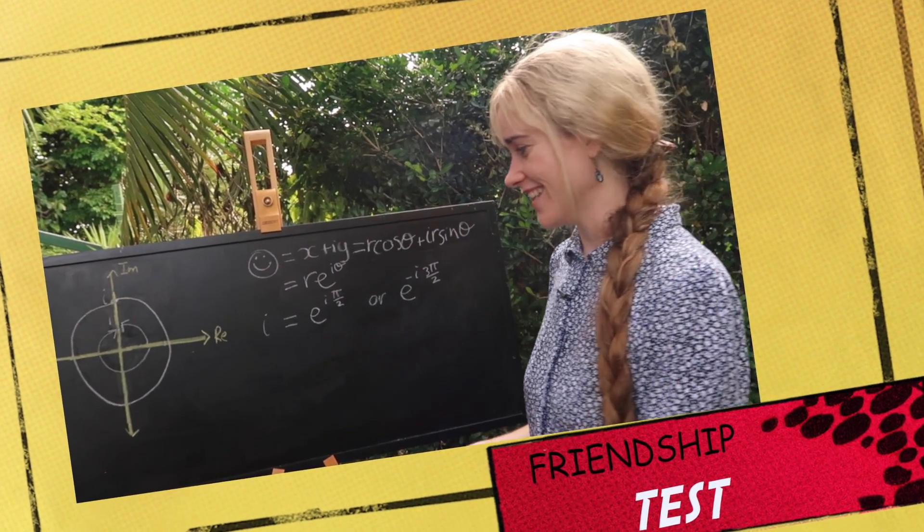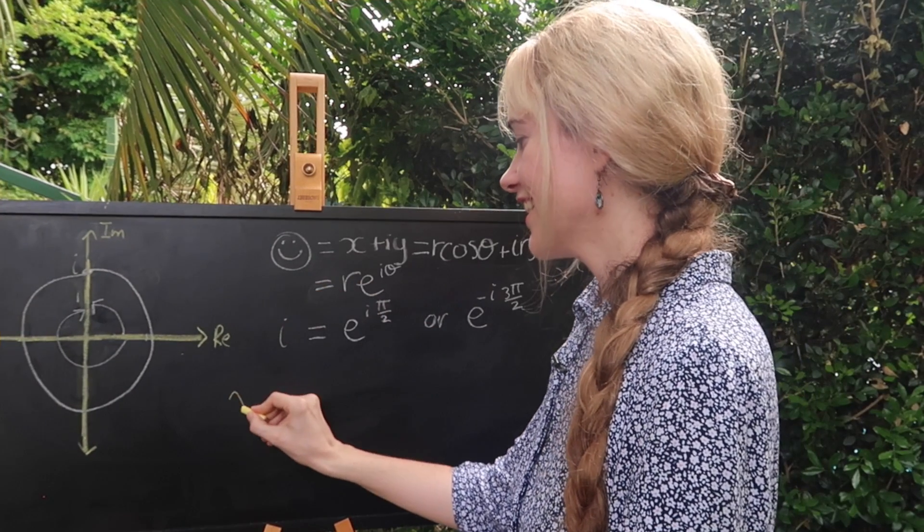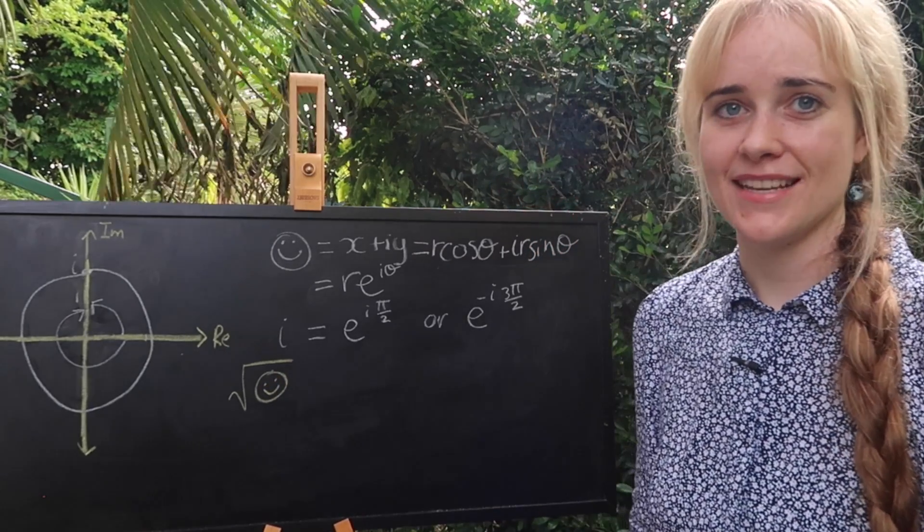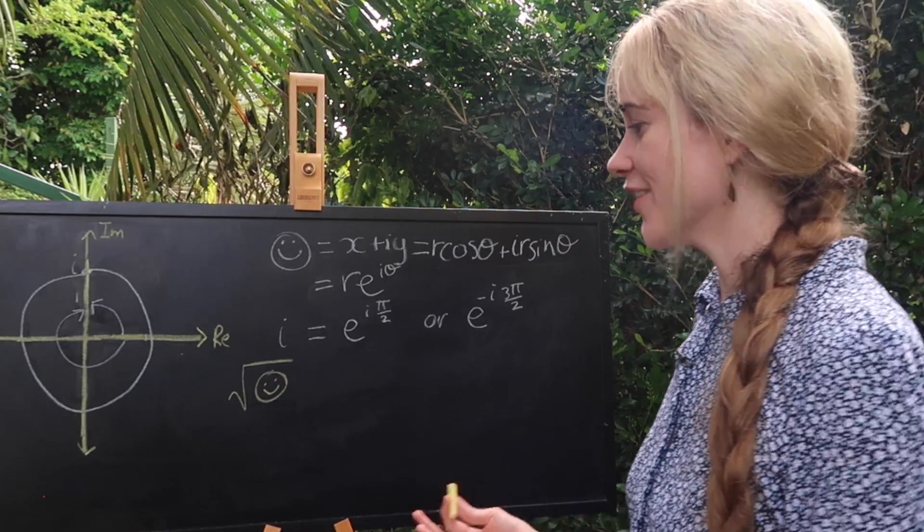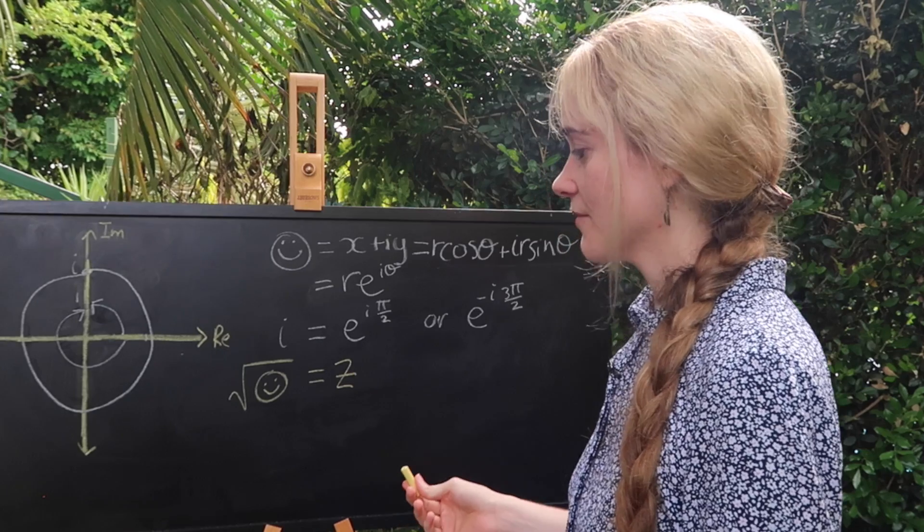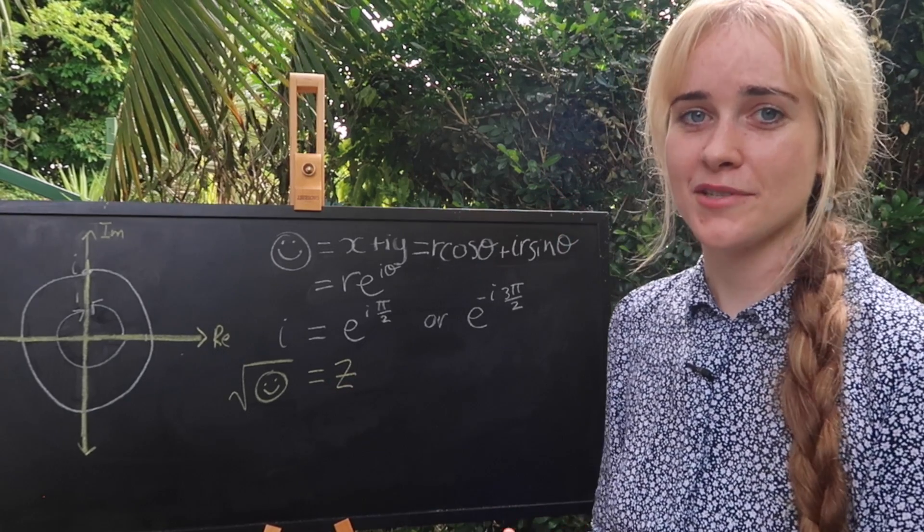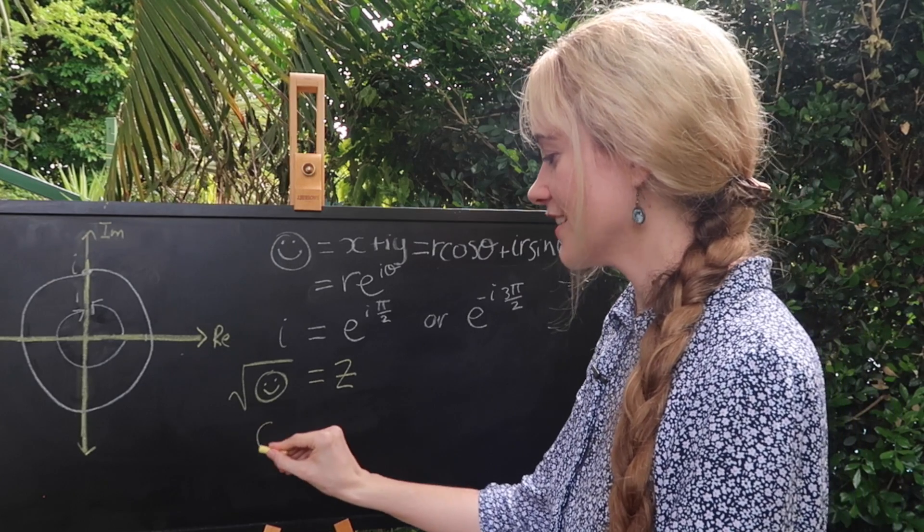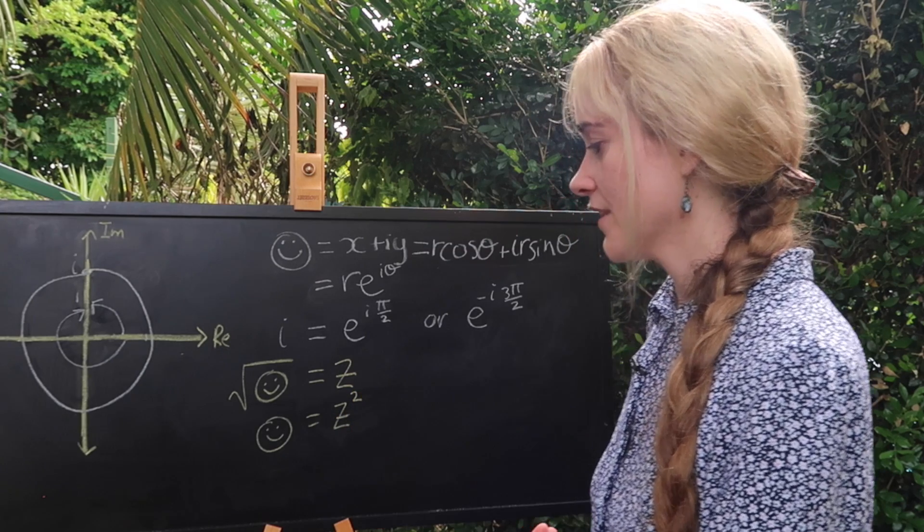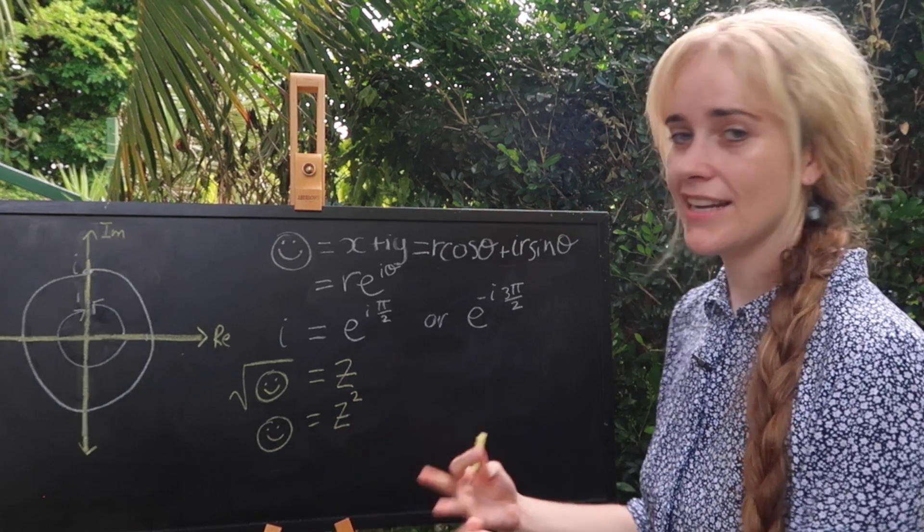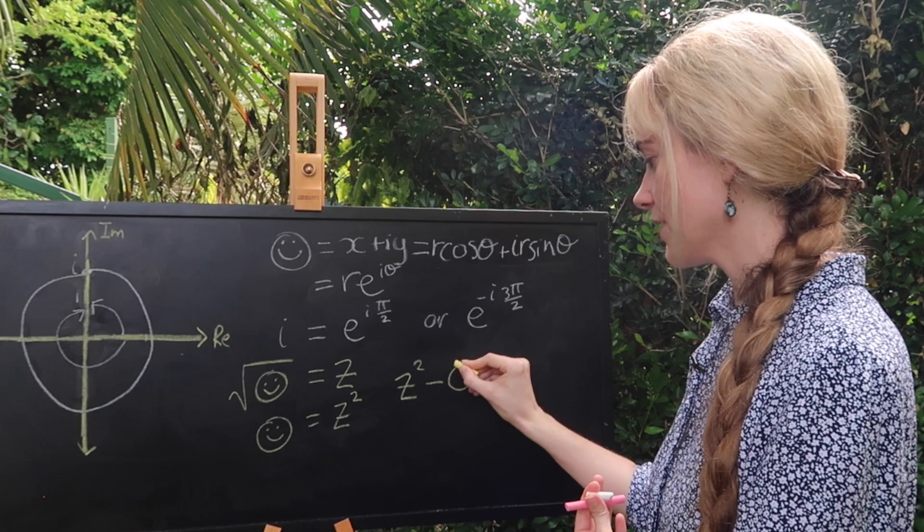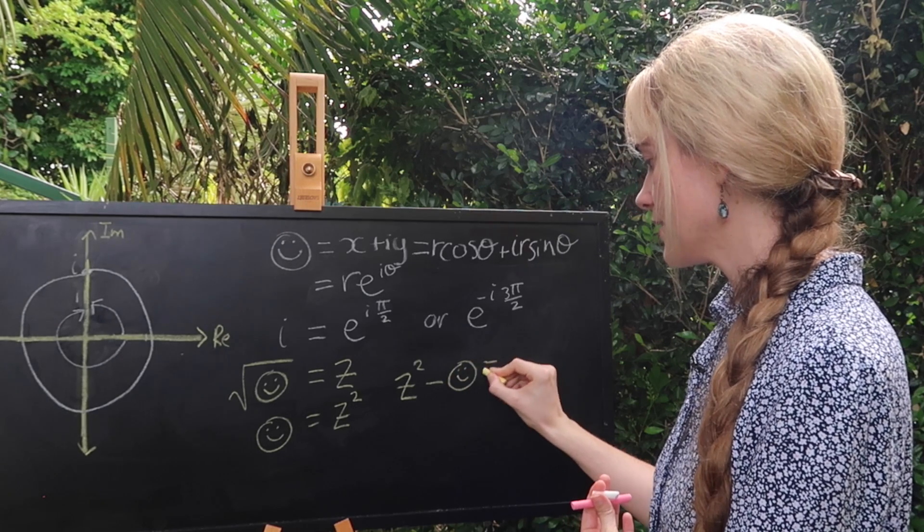It's time for a friendship test here and we want to test to see that if the square root of our complex friend is written like this what's the solution going to be. We can say that the square root of any complex friend is some other number z. If we make both of these guys a little bit more square we can write complex friend is equal to z squared. Now if we subtract this from this and arrange everyone to equal zero we get z squared minus our complex friend is equal to zero.